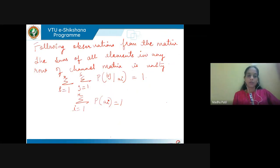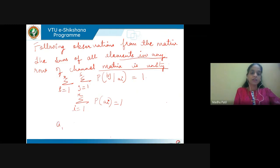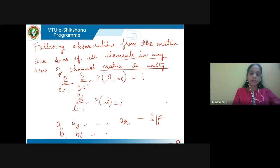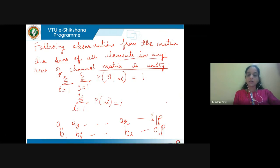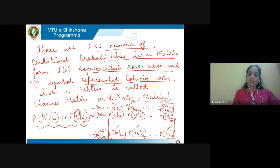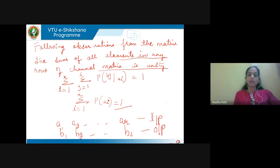From the noise matrix, the sum of all elements in any row of the channel matrix is equal to unity. Here, i goes from 1 to R (input symbols A1, A2, up to AR) and j goes from 1 to S (output symbols B1, B2, up to BS). When we add all elements in a row — for example, when A1 is transmitted — the sum equals 1. So the sum of all elements in any row of a channel matrix is equal to unity.